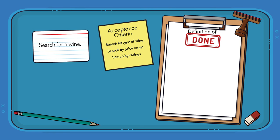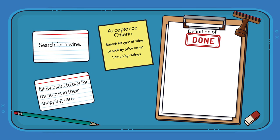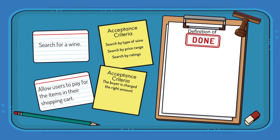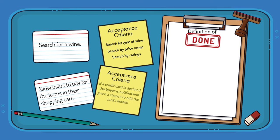On this same wine shopping site, there will be another backlog item that allows users to pay for the items in their shopping cart. That will have acceptance criteria such as the buyer is charged the right amount, shipping charges are calculated correctly and added, if a credit card is declined, the buyer is notified and given a chance to edit the card's details, and more.